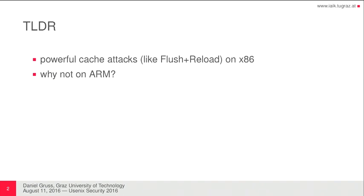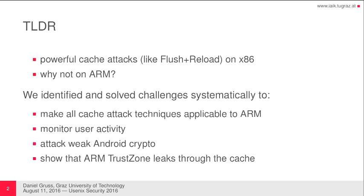I will start right away with an overview. We had powerful cache attacks like Flush and Reload, like Prime and Probe on x86 in the last few years. And we have not seen any powerful cache attacks like this on ARM CPUs and on mobile devices. And we asked the question: why is that? Why are there no such powerful attacks there? And we started identifying the challenges and solving them systematically.